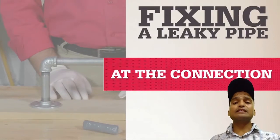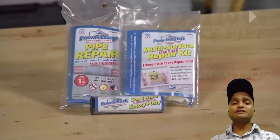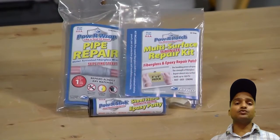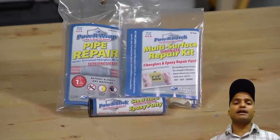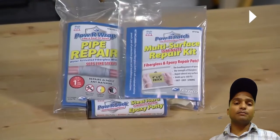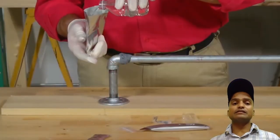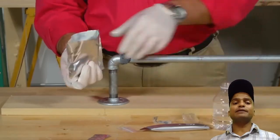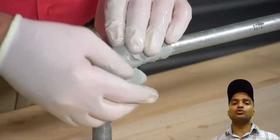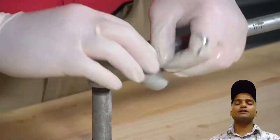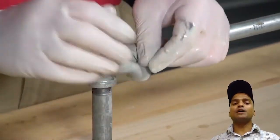If we want to fix a leaking pipe at the connection and the pipe is metallic pipe, then we have to use something called fiberglass and epoxy repair patch. This is very important because this is a chemical which is activated simply by addition of water. And then we just wrap this cloth just like a bandage around the leaking joint to avoid leakage.